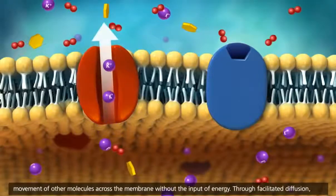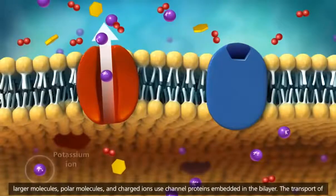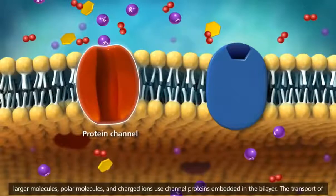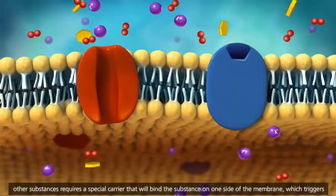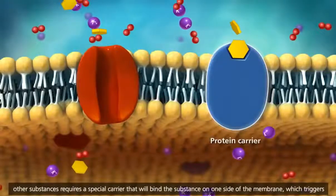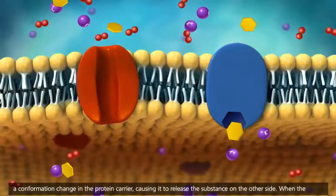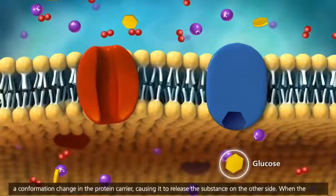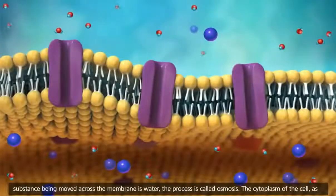Through facilitated diffusion, larger molecules, polar molecules, and charged ions use channel proteins embedded in the bilayer. The transport of other substances requires a special carrier that will bind the substance on one side of the membrane, which triggers a conformation change in the protein carrier, causing it to release the substance on the other side. When the substance being moved across the membrane is water, the process is called osmosis.